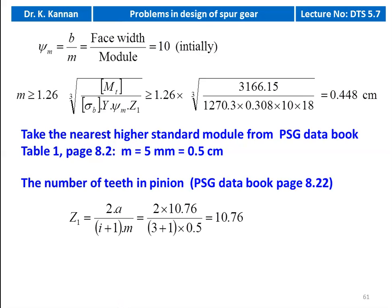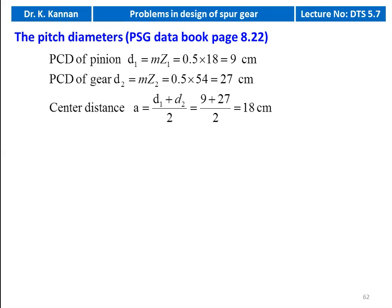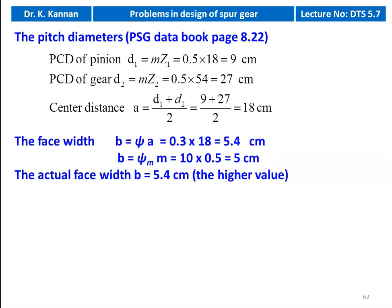Number of teeth on the pinion: z1 = 2a/(i+1)×m = 2×10.76/(3+1)×0.5 = 10.76. We take minimum number of teeth z1=18 and number of teeth on the gear z2 = i×z1 = 3×18 = 54. PCD of pinion d1 = m×z1 = 0.5×18 = 9 centimeter. PCD of gear d2 = m×z2 = 0.5×54 = 27 centimeter. Center distance a = (d1+d2)/2 = (9+27)/2 = 18 centimeter. Face width: b = psi×a = 0.3×18 = 5.4 centimeter; also b = psi_m×m = 10×0.5 = 5 centimeter. The higher value is 5.4 centimeter — actual face width is 5.4 centimeter.